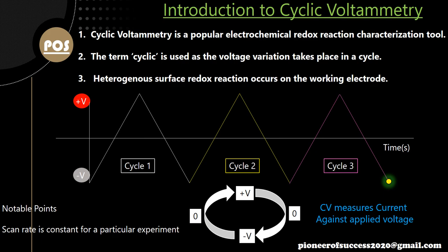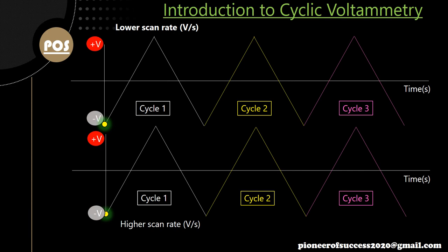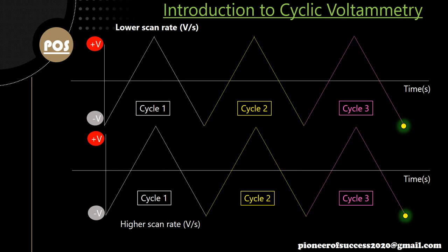One notable point is that the scan rate is constant for a particular experiment. We have plotted voltage against time, and the speed of variation is important — that is, how much voltage you are changing per second measures the scan rate. You can have a very high or low scan rate. In this animation, the top one has a lower scan rate and the bottom one has a higher scan rate, as the bottom one completes faster.